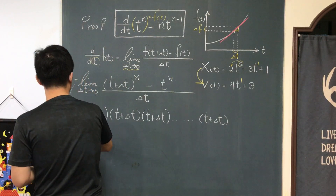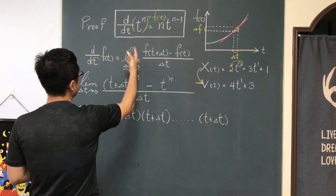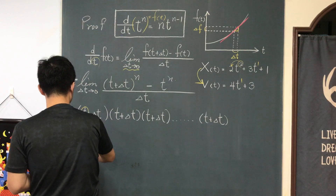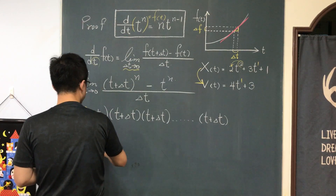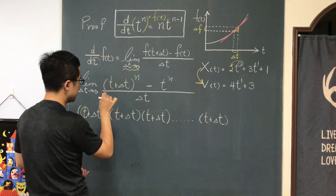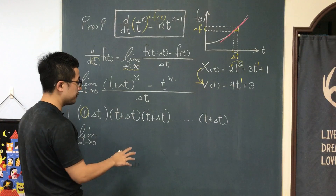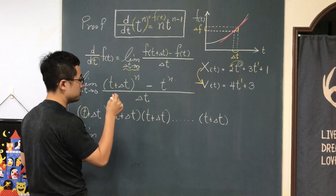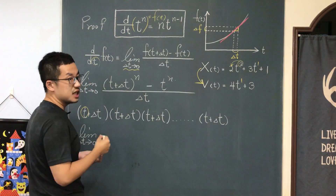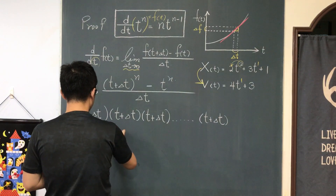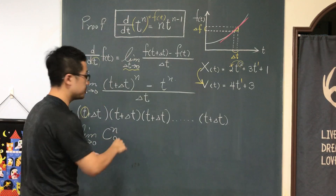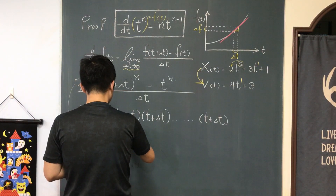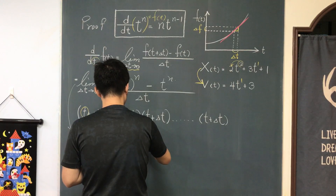The derivative of tⁿ is written as the limit as Δt approaches 0. The first term is n choose 0 times tⁿ times Δt⁰ — I choose n t's from all the terms and leave no choice for delta t. Plus n choose 1: I choose 1 delta t from any one of the n terms. The number of options is n choose 1, times Δt¹, times t to the n minus 1.